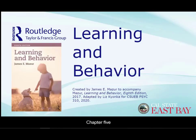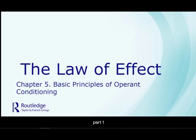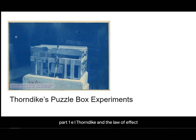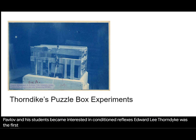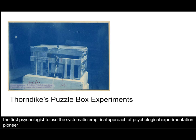Chapter 5: Basic Principles of Operant Conditioning, Part 1. E. L. Thorndike and the Law of Effect. At the turn of the 20th century, about a decade before Pavlov and his students became interested in conditioned reflexes, Edward Lee Thorndike was the first psychologist to use the systematic empirical approach of psychological experimentation pioneered by Herman Ebbinghaus in the 1880s to study animal intelligence.